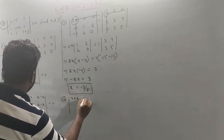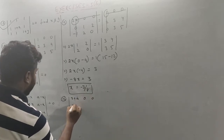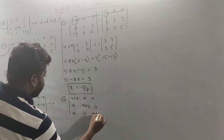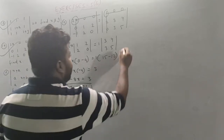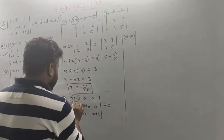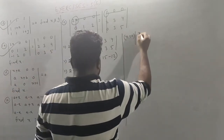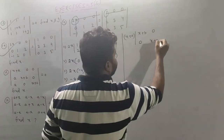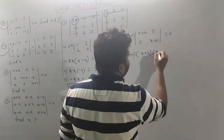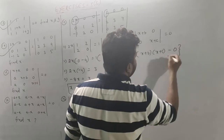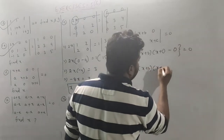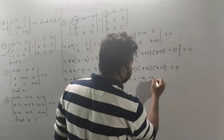The next matrix has diagonal entries: x plus a, 0, 0; a, x plus b, 0; a, 0, x plus c equal to 0. Find x. So simple — direct expansion: x plus a times x plus b times x plus c minus 0 equals 0. So x plus a times x plus b times x plus c equals 0. Therefore x equals minus a, minus b, or minus c.